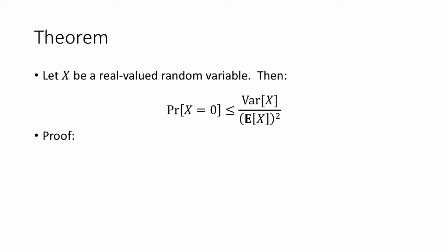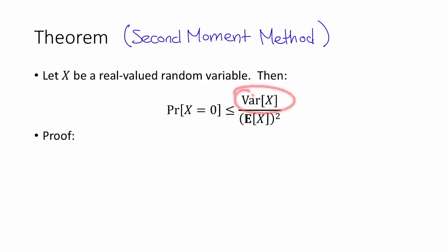It turns out that if the variance is bounded, then a counterexample like this can't happen. More precisely, we have the following theorem, which is also known as the second-moment method. Suppose that x is a real-valued random variable. Then the probability that x is equal to 0 is bounded above by the variance of x divided by the expectation of x squared. In particular, if the variance of x is small compared to the expected value of x squared, then this probability is also small.